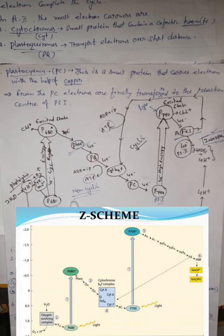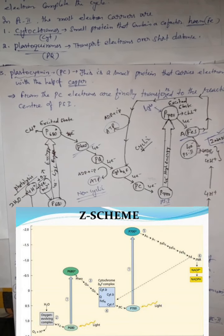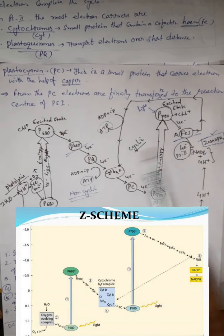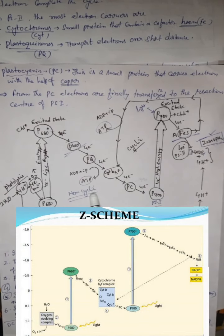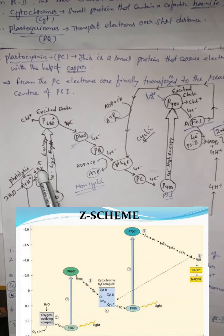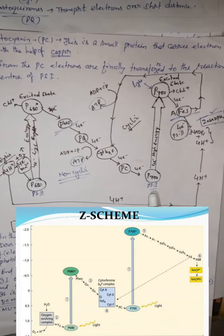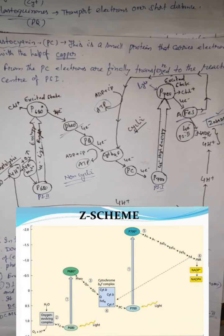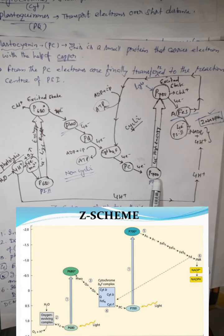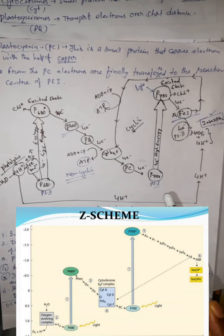During non-cyclic photophosphorylation, the products are one molecule of ATP and two molecules of NADPH₂, and oxygen is released to the atmosphere. Now let us discuss photosystem 1. When the light wavelength gradually increases up to 700 nanometers or beyond, the second process starts — PS1.